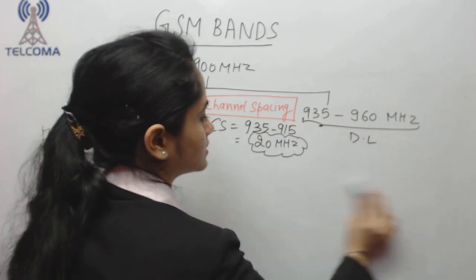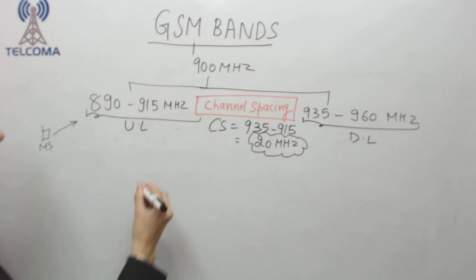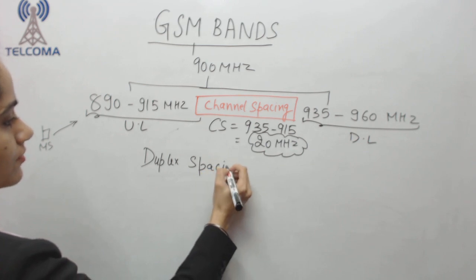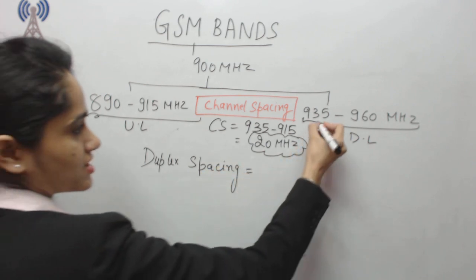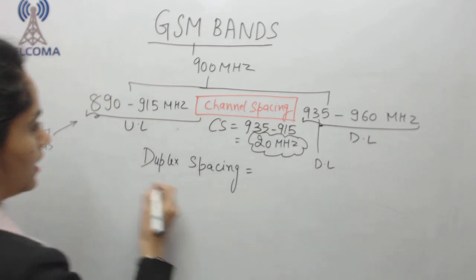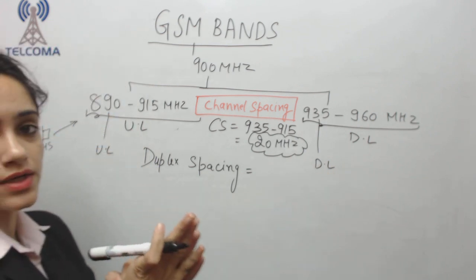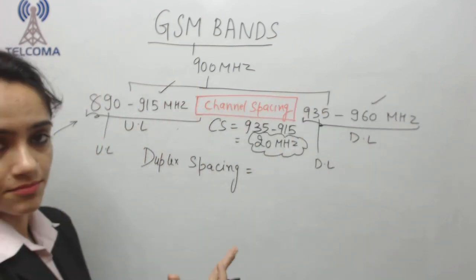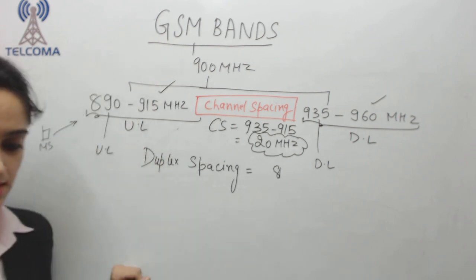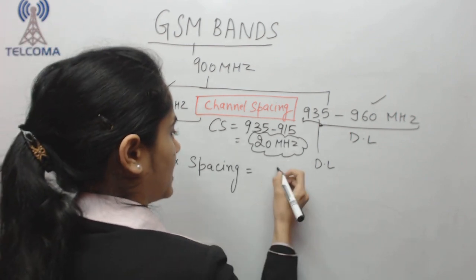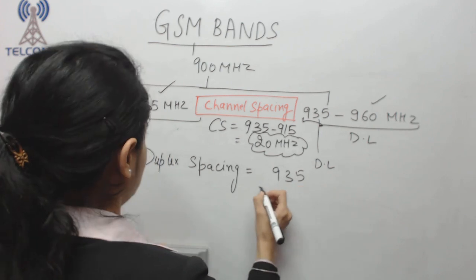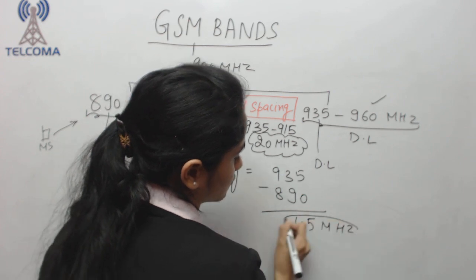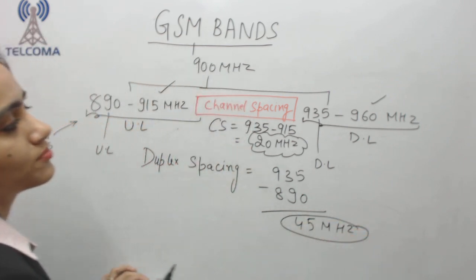Other than channel spacing, we have the concept of duplex spacing. Duplex spacing is the space between the first uplink frequency and the first downlink frequency. This difference remains the same from the last uplink to the last downlink as well. Here, 935 minus 890 equals 45 megahertz, so the duplex spacing in the 900 megahertz band is 45 megahertz.